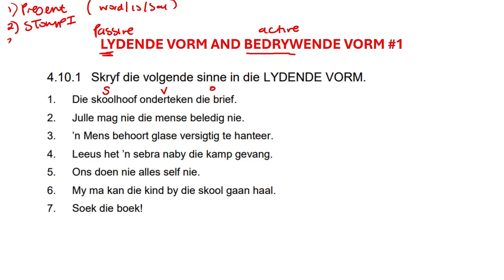The third step is we are going to start with the object. What is our object? We've already determined that, so now you can just go. Because the hardest part is out of the way — you've determined your stompie. So we start with the object: 'die brief.' Then we have to add 'woord', 'is', or 'sal', and that depends on the tense of your sentence. The tense here was present tense, so we use 'woord'. So: 'die brief woord.'